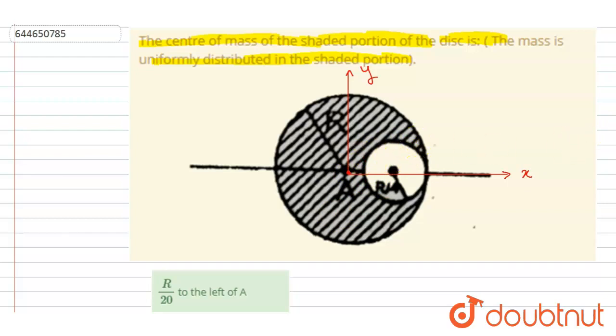Now if you see, we can assume this as made up of a bigger disk of radius R minus a smaller disk of radius R. This is capital R and this is capital R by 4. And the center of mass of the two will lie at (0, 0).